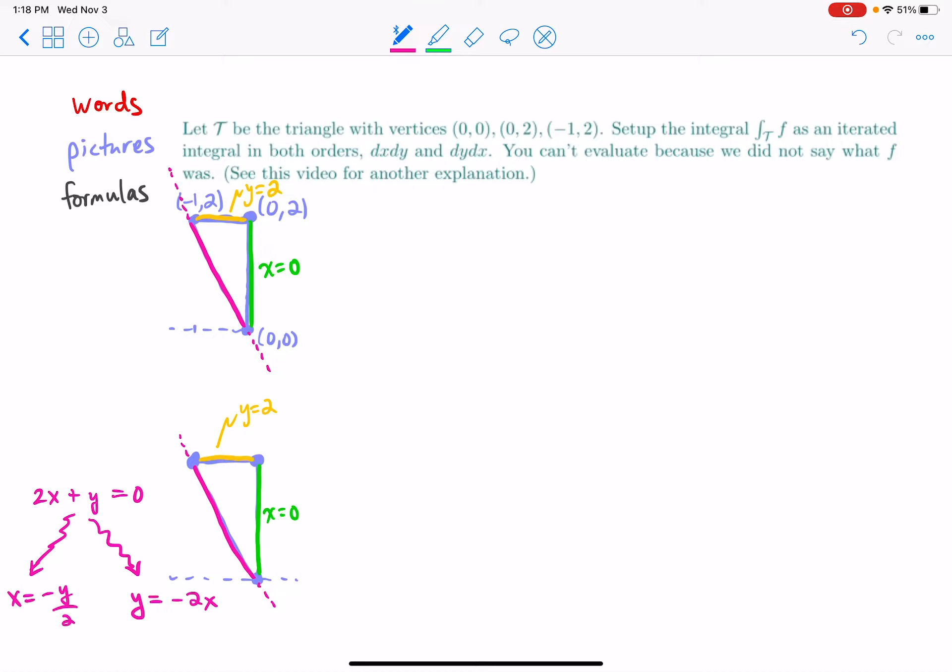And we'll actually need both for this question. Okay, so let T be that triangle. Now we really know what it is, we've examined it and its boundary lines. Set up the integral as an iterated integral.